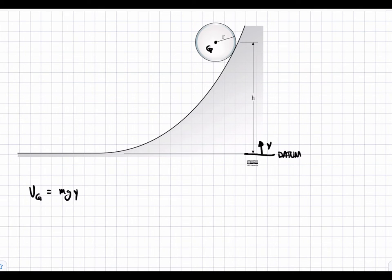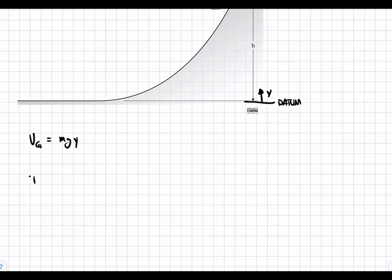Now, let's look at the kinetic energy, which is a bit more involved. So, T, the kinetic energy, is going to be equal to one-half mvg squared plus one-half I omega squared.